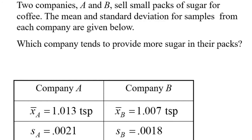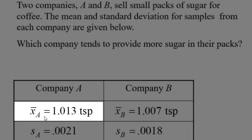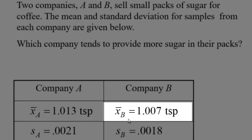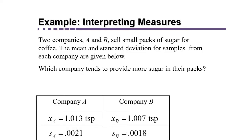First of all, which company tends to provide more sugar in their packets? Company A has a mean amount of sugar of 1.013 teaspoons. Company B has a mean amount of sugar of 1.007 teaspoons. On average, it appears that company A provides more sugar — it has a greater mean amount of sugar in each packet.